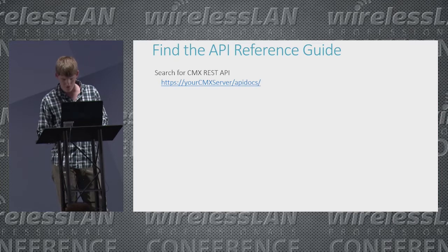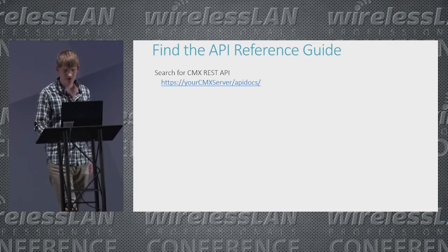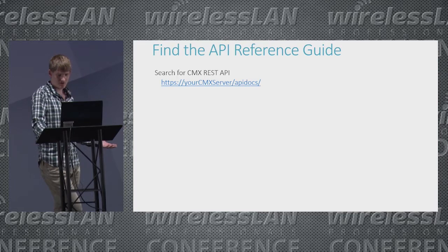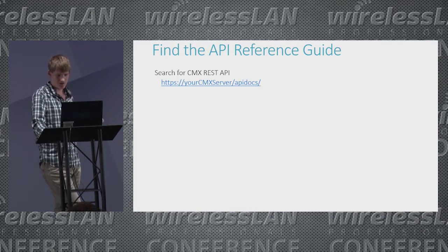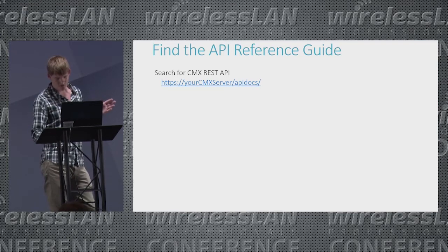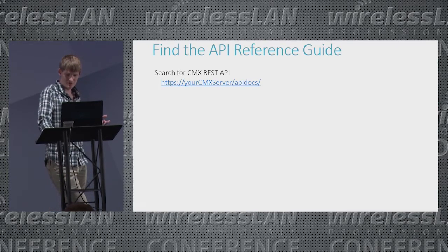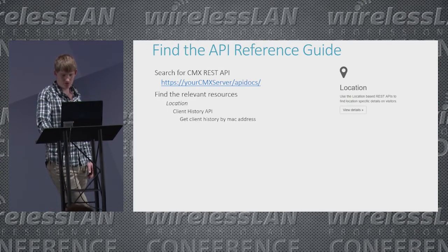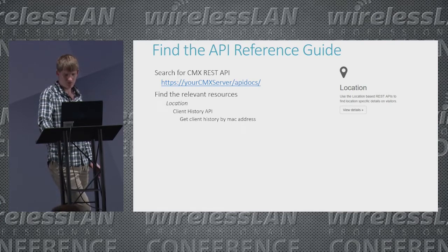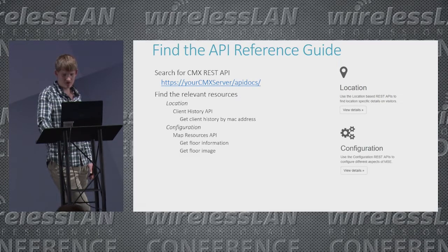We've already defined our requirements, so the next step is finding the API reference guide. You can usually find a product's reference guide by Googling the product name followed by 'REST API' or 'API reference.' In this case, the guide is located on our CMX server. If you don't know what Cisco CMX is, it's an application that gives you the wireless location of your clients. Reading through the reference guide, we find three specific APIs we will need to plot our user on the map: get client history by MAC address, get floor information, and get floor image.